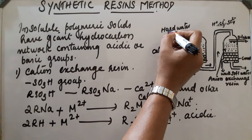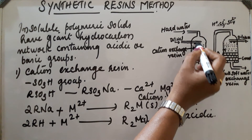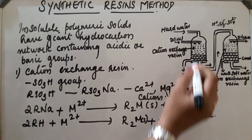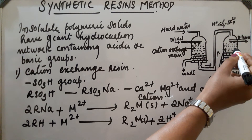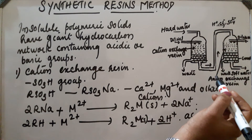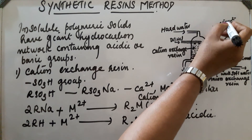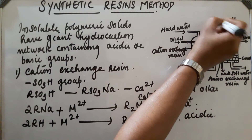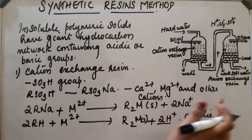Hard water is first passed through the cation exchange resin. During this process H+ ions make the water acidic. It is then passed through the anion exchange resin, which can remove different anions. Cl− anions, SO42− anions — all these can be removed. Also, H+ ions get neutralized by OH− ions released by the anion exchange resin.